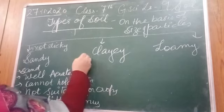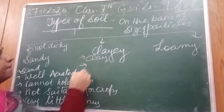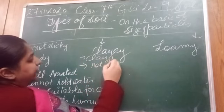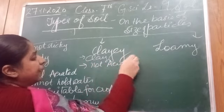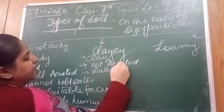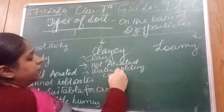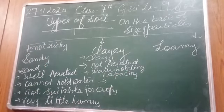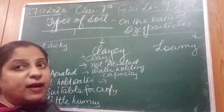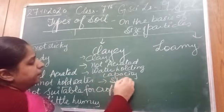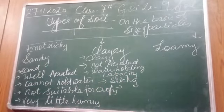Clay soil mainly contains clay — particles are very close to each other and the particle size is small, so it is not well aerated and air cannot pass through easily. However, because the particles are very close to each other, the water-holding capacity is high — it can hold more water. Because the water-holding capacity is high, it gets waterlogged during the rainy season, and it is very sticky.